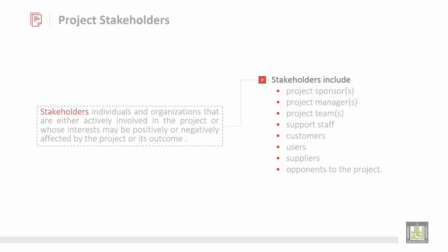What are project stakeholders? Stakeholders are the individuals and organizations that are either actively involved in the project, or whose interests may be positively or negatively affected by the project and its outcome. So they are part of the project — they help to develop the project in a direct or indirect manner.